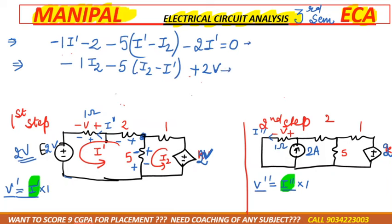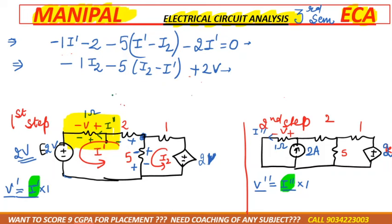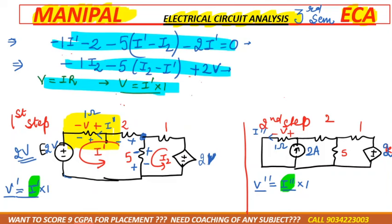This gives us the first and second mesh equations. We also need an equation for the dependent source, which depends on voltage v. According to Ohm's law applied to the yellow portion of the circuit: v equals i-dash multiplied by resistance, and resistance in that portion is 1 ohm. So with three equations and three variables, we can solve for i-dash.